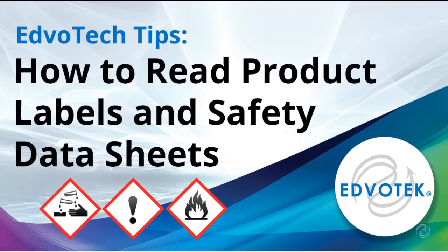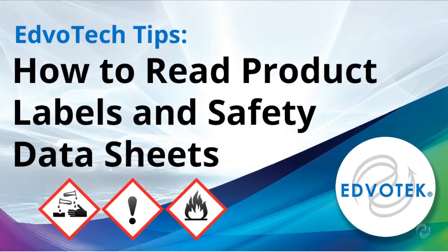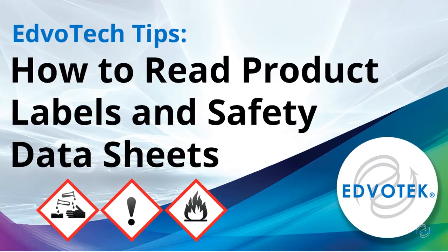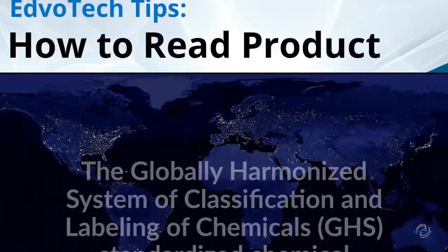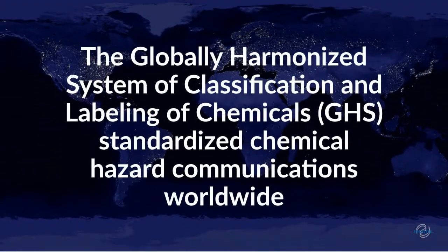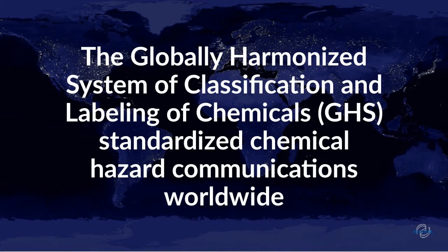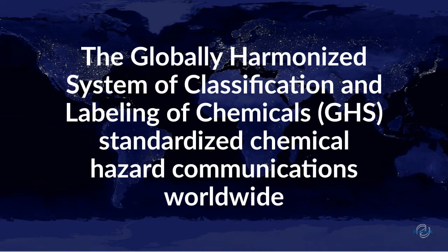Edvotech Tips: How to Read Product Labels and Safety Data Sheets. In March 2012, the United States Occupational Safety and Health Administration, or OSHA, adopted the Globally Harmonized System of Classification and Labeling of Chemicals, or GHS.